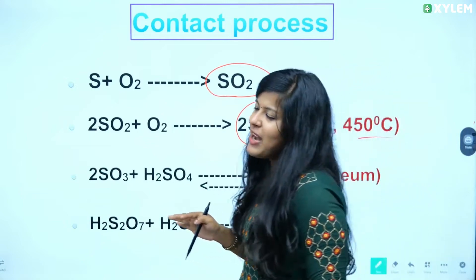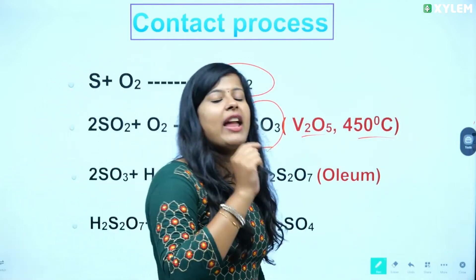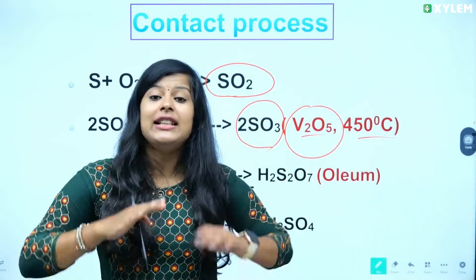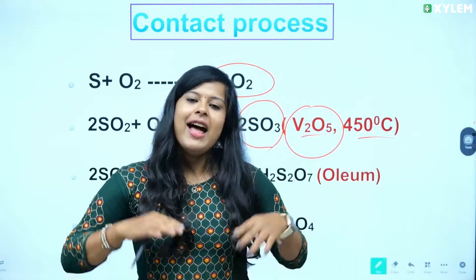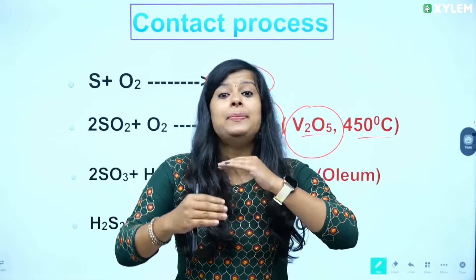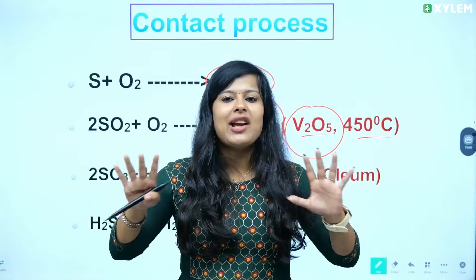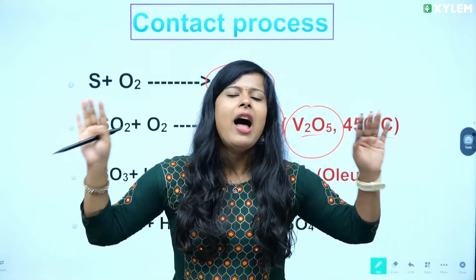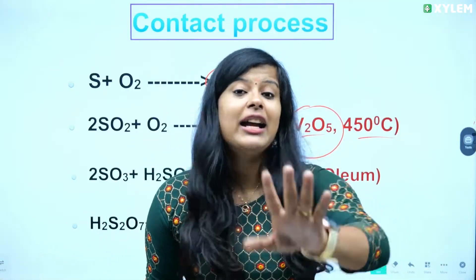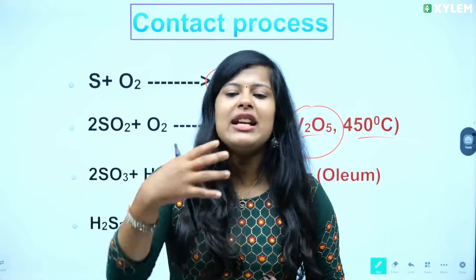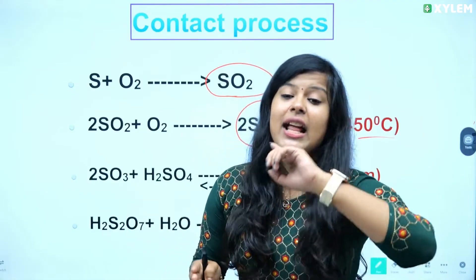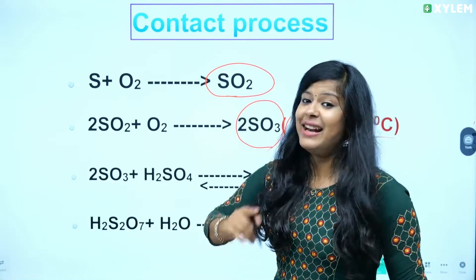Vanadium pentoxide is V2O5. That is the catalyst. That is what we call a chemical reaction — it speeds up the process. But without the catalyst, the reaction does not work. That is why we use the catalyst V2O5.